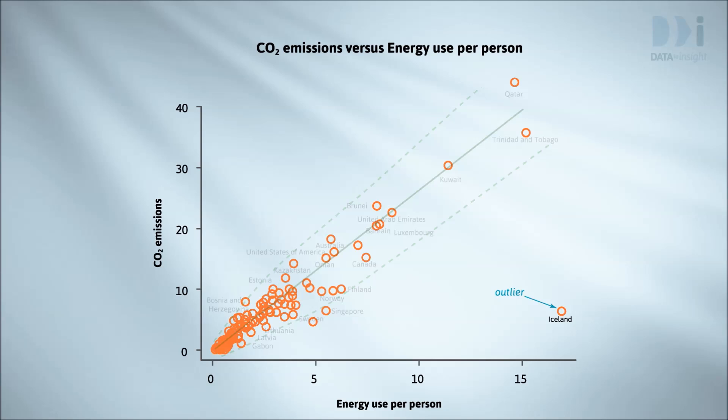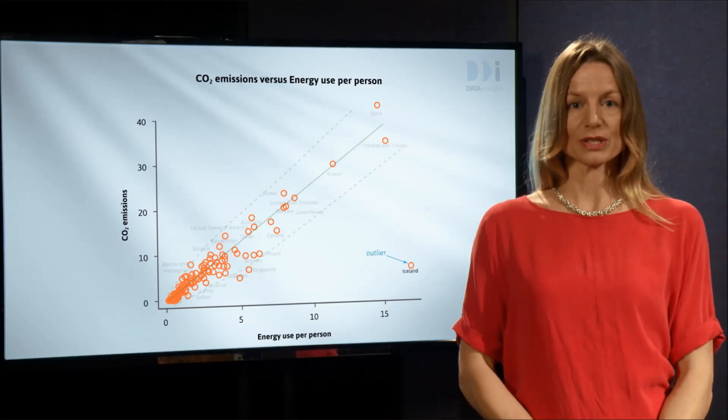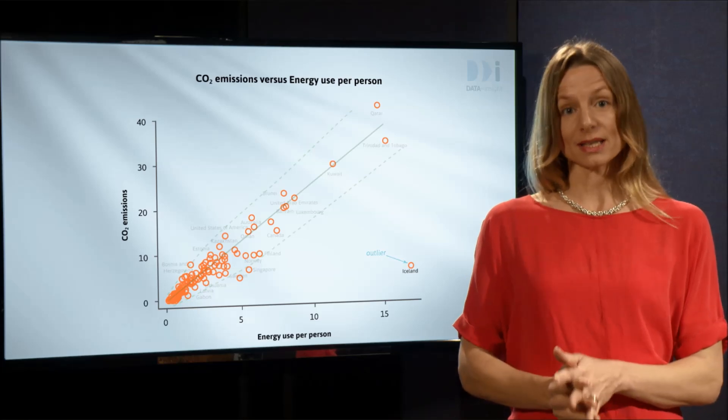In this case the outlier is Iceland, and it is very different indeed. According to Wikipedia, about 65% of total primary energy supply in Iceland is derived from geothermal energy — basically naturally produced steam — which can be harnessed directly for things like home heating, without needing the sorts of processing that add to CO2 emissions. Another 20% is hydroelectricity. This is why Iceland has very low CO2 emissions in comparison to their high energy use.